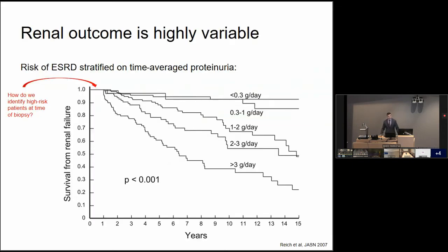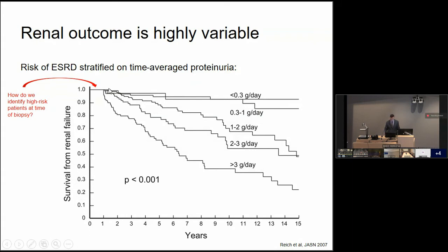We all know that the risk of renal progression in IgA nephropathy is highly variable. This was highlighted by Heather Reich's study in 2007, in which she stratified patients according to their average proteinuria over the entire duration of follow-up and demonstrated quite a wide range in risk of end-stage renal disease. However, this doesn't really help us in clinical practice when we don't know someone's proteinuria over the entire duration of follow-up. So what we're going to focus on is: if we're sitting at the time of biopsy, how do we predict someone's future risk of progression without requiring the entire follow-up duration?